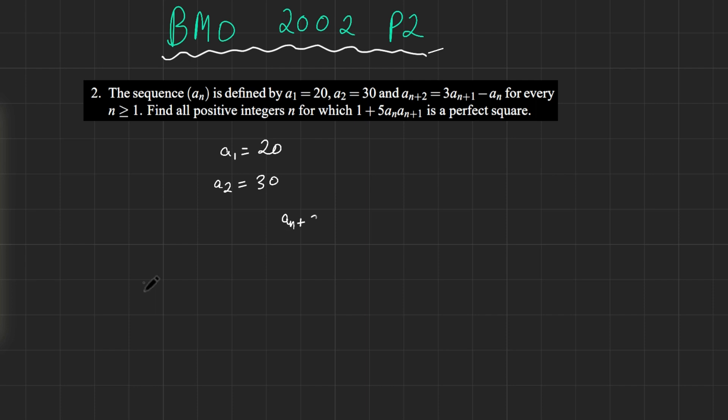The problem says: given a₁ equals 20, a₂ equals 30, and the recurrence relation aₙ₊₂ equals 3aₙ₊₁ minus aₙ, find all integers n for which the quantity 1 plus 5aₙ times aₙ₊₁ is a perfect square. If you want to pause the video and give the problem a try, do so now.